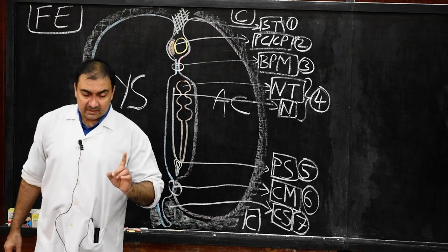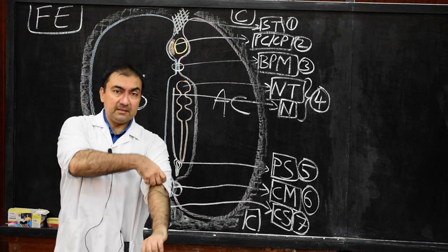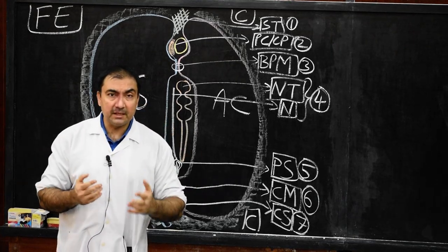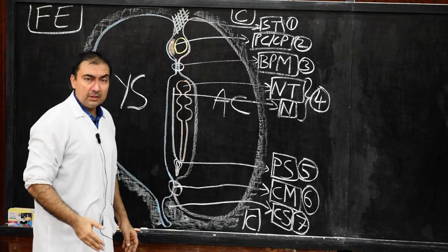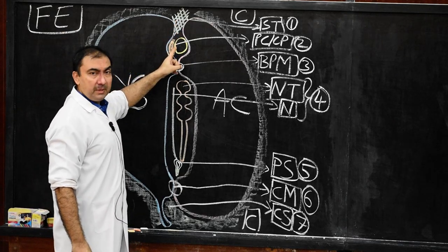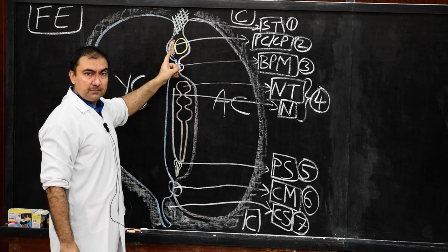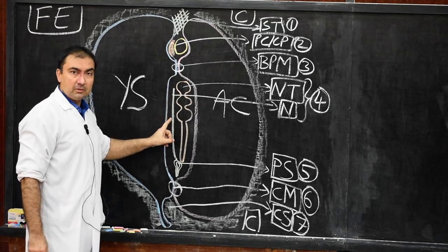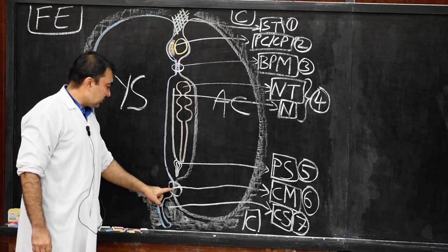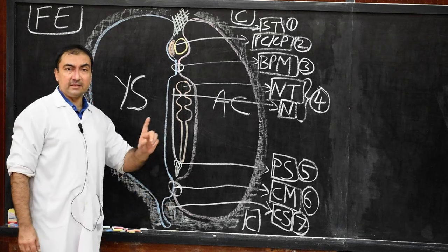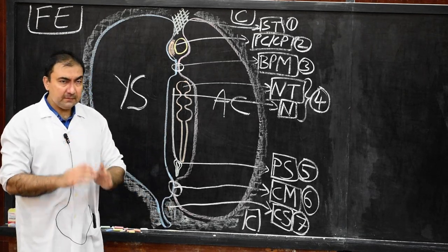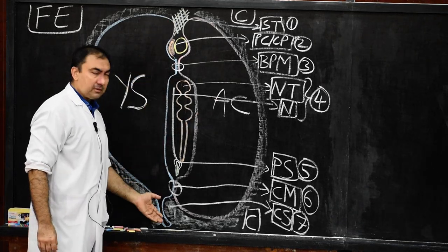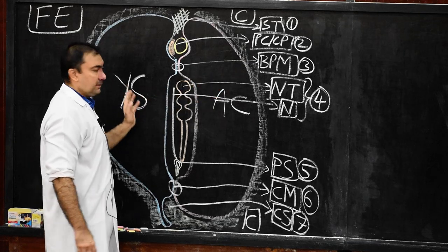After drawing this diagram, see how simple it is. These are the structures present in the midline axis of the embryo before folding, from cephalic to caudal: septum transversum, pericardial sac with cardiogenic plate, then buccopharyngeal membrane, then neural tube with notochord, then primitive streak, then cloacal membrane, and then connecting stalk. Remember this structure and this is the complete sagittal section of the embryo.